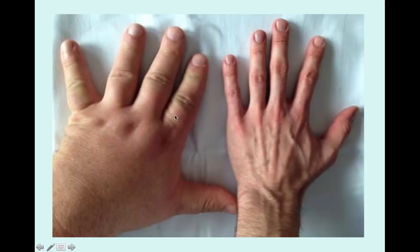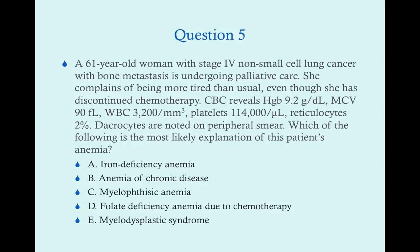Question five: A 61-year-old woman with stage four non-small cell lung cancer with bone metastases on palliative care complains of increased fatigue. CBC: hemoglobin 9.2 g/dL, MCV 90 fL, WBC 3,200/mm³, platelets 114,000/µL, reticulocytes 2%. Dacrocytes are noted on peripheral smear. What is the most likely explanation for her anemia? A) iron deficiency anemia, B) anemia of chronic disease, C) myelophthisic anemia, D) folate deficiency anemia from chemotherapy, or E) myelodysplastic syndrome.